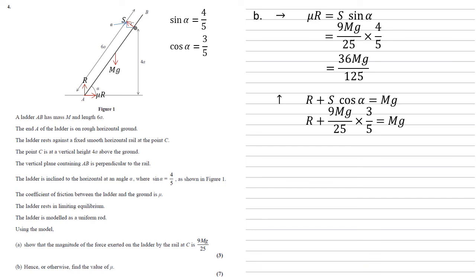Replacing the S and the cos alpha we get R plus 9MG over 25 times 3 fifths equals MG. Rearranging to get R equals MG minus 27MG over 125 which is the same as 98MG over 125.